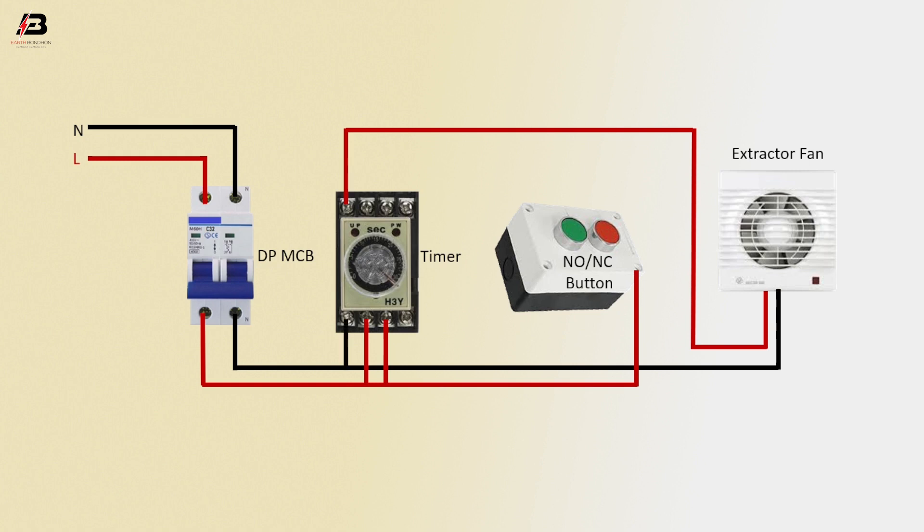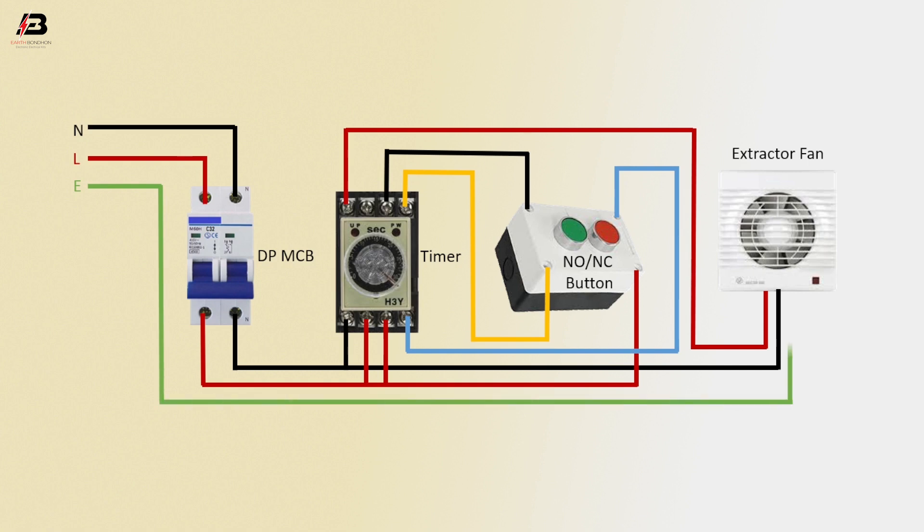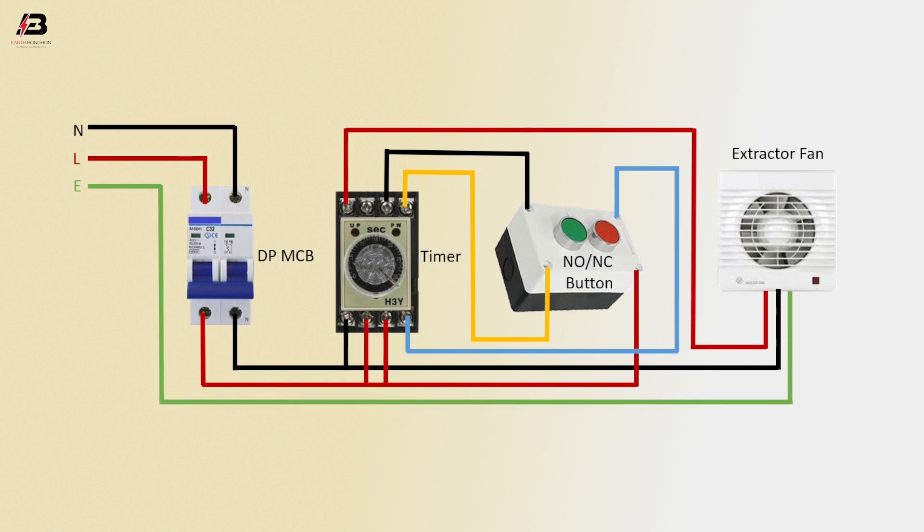Neutral connection to timer. Neutral connection from timer to NO/NC button. Another connection from timer to connect NO/NC button. Output connection from timer to connect NO/NC button. Earthing connection to extractor fan. Now the circuit is ready for use.